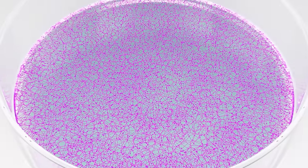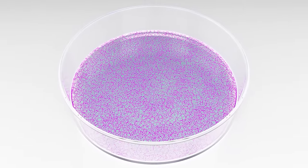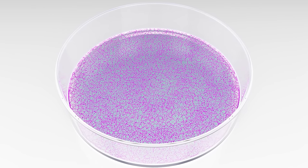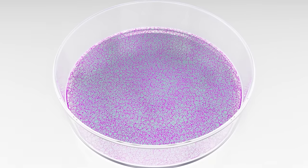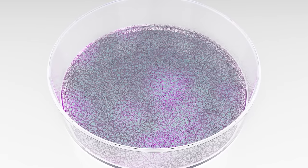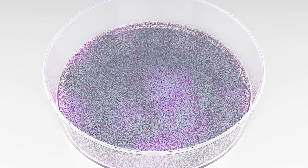These cells grew at the bottom of a lab dish and acquired the dish's flat, two-dimensional shape, which is very different from the three-dimensional shape they have inside the body. They also didn't last long and we needed a way to observe their development over a greater period of time.